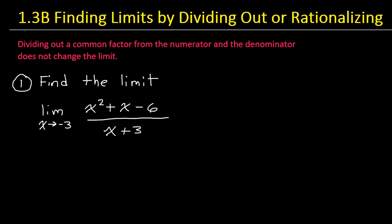In a previous video, we learned that many limits can be found using direct substitution. In this video, we will begin to explore what techniques we can use when direct substitution is not possible. Let's start off by examining two techniques: dividing out and rationalizing.